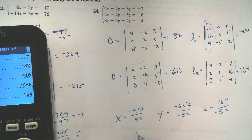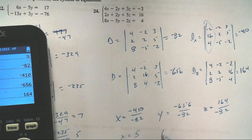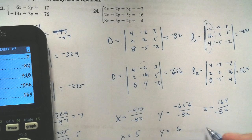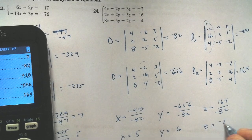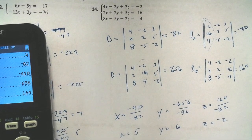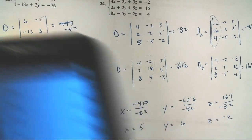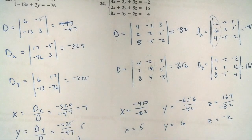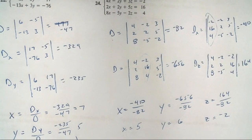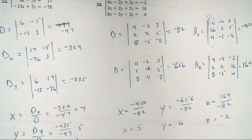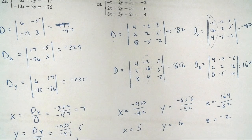x equals 5, y equals 6, and z equals 164 divided by negative 82 equals negative 2. And there we have it — Cramer's Rule. Not my finest work, but hopefully we got the point. Good luck, and let me know if I can help.